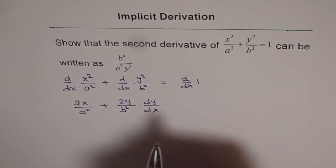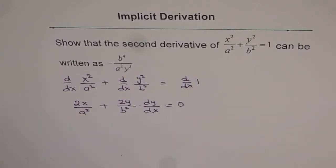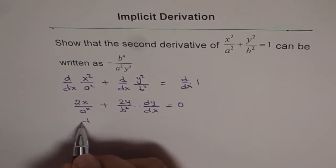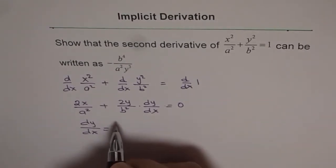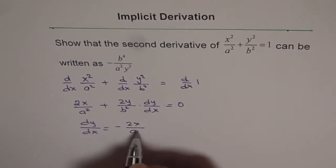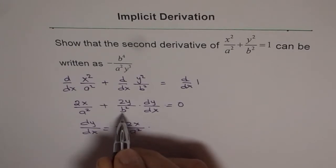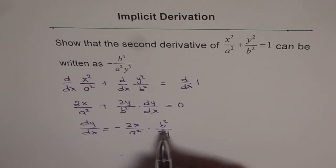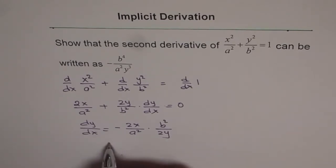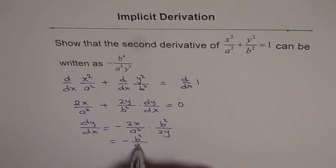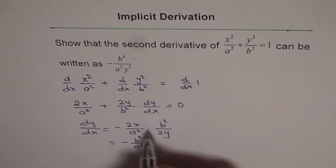We have applied the chain rule here, equals to 0. Now we can isolate and find what dy/dx is. We take this term to the right side, which is minus 2x over a squared, and then multiply by b squared over 2y. With that we can simplify and the derivative is negative: b squared over a squared times x over y.